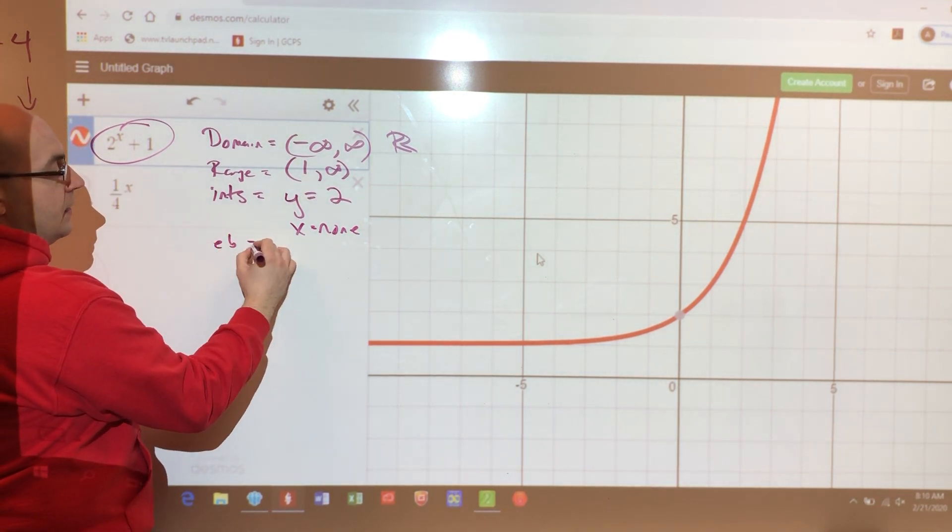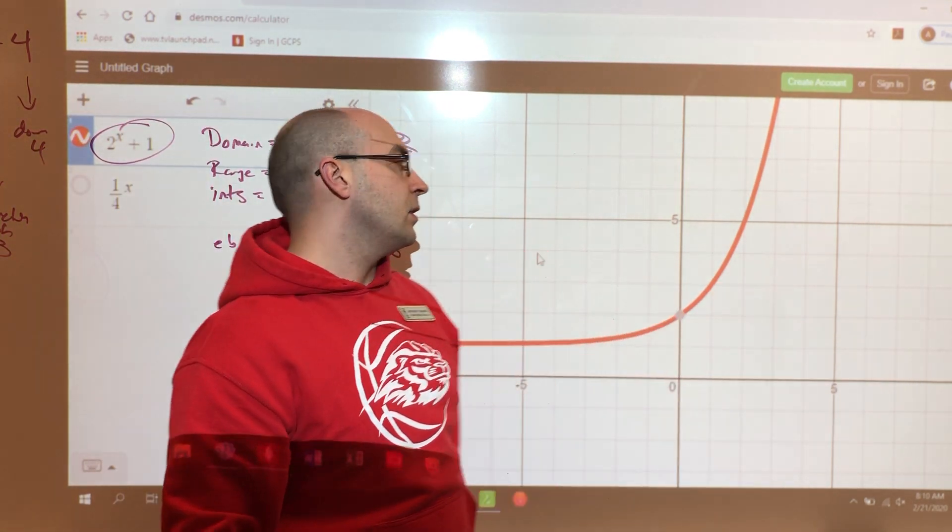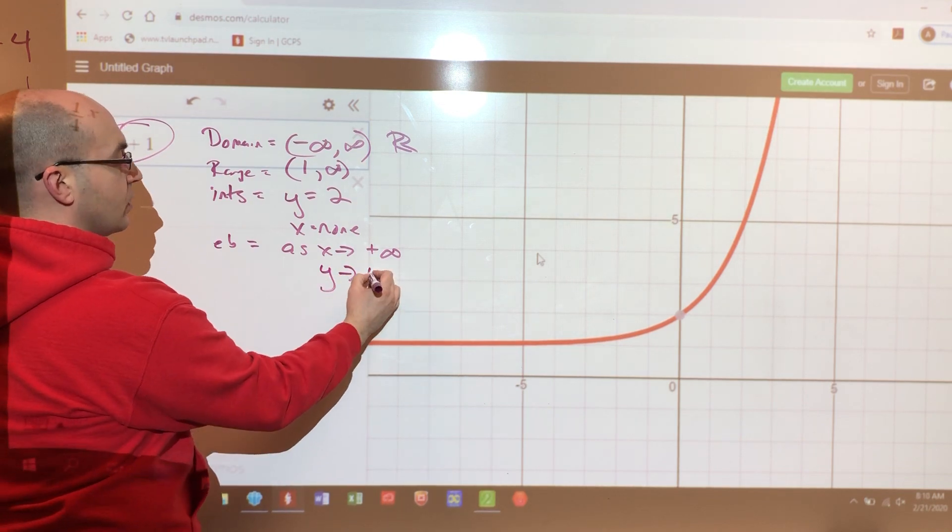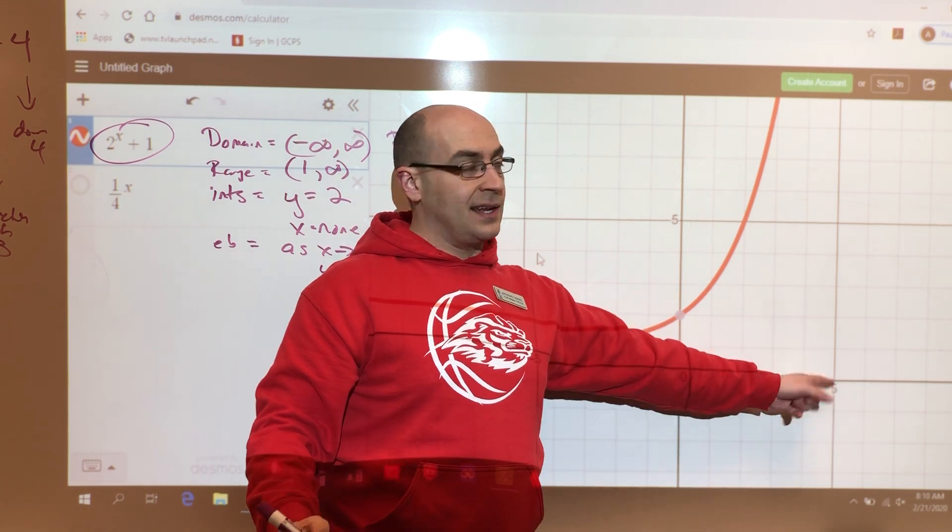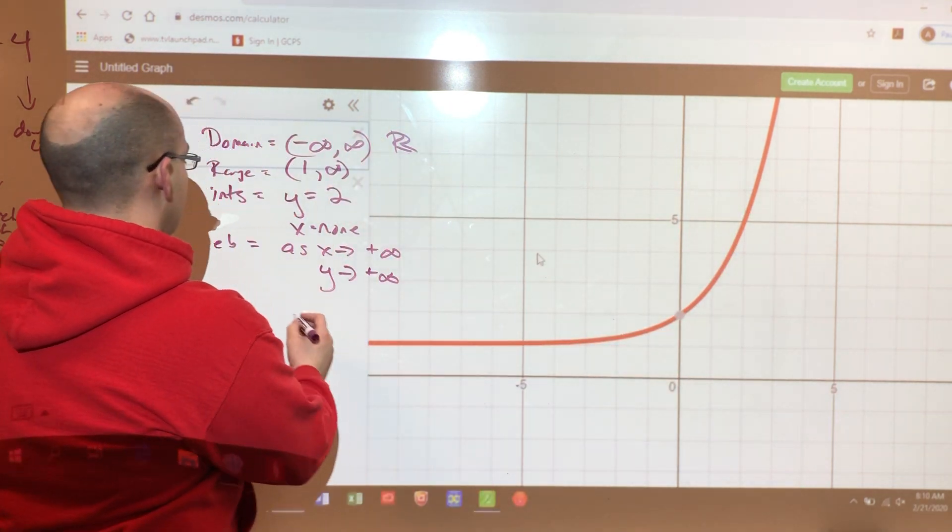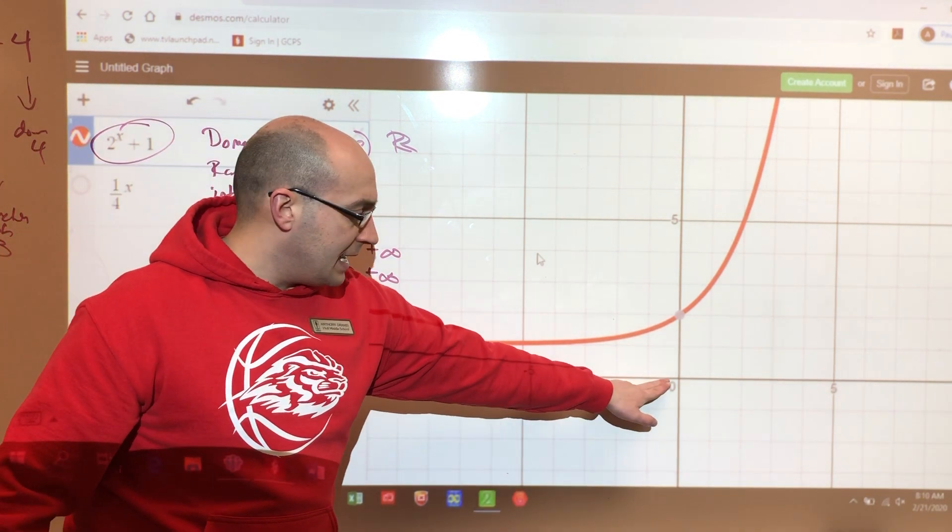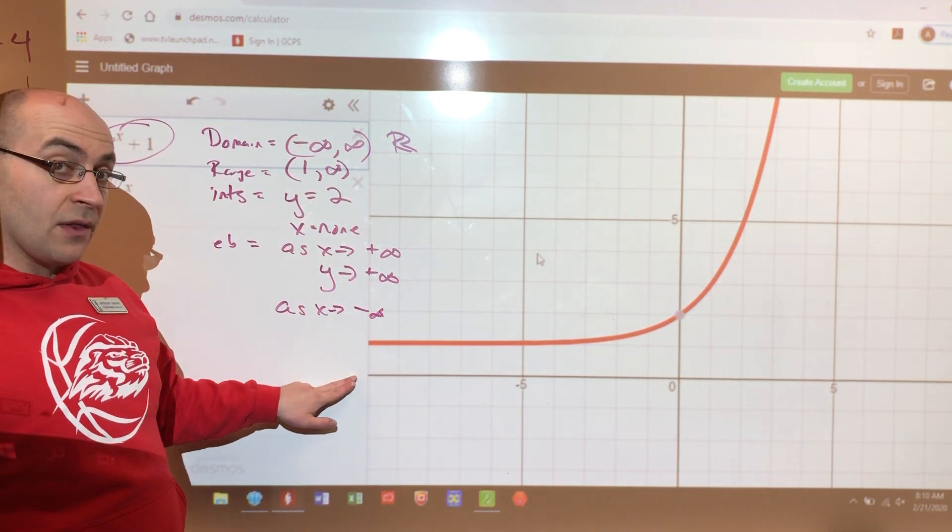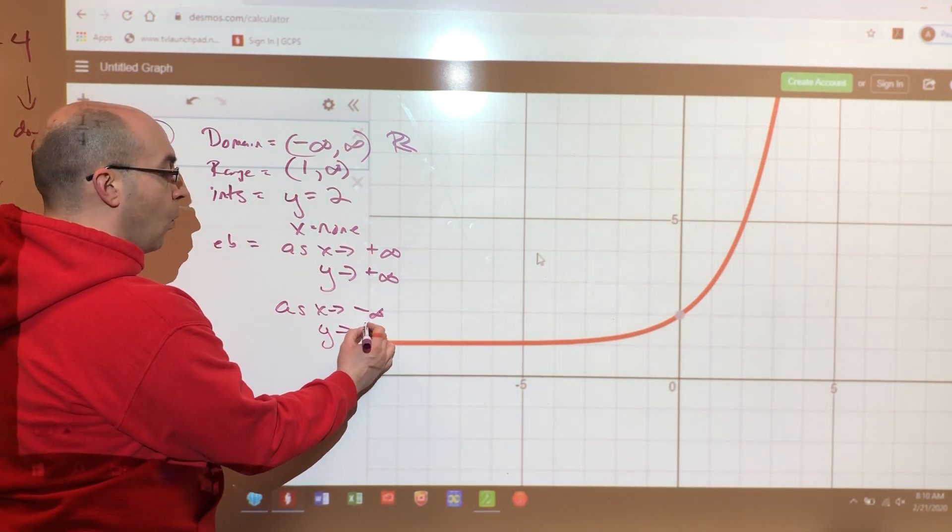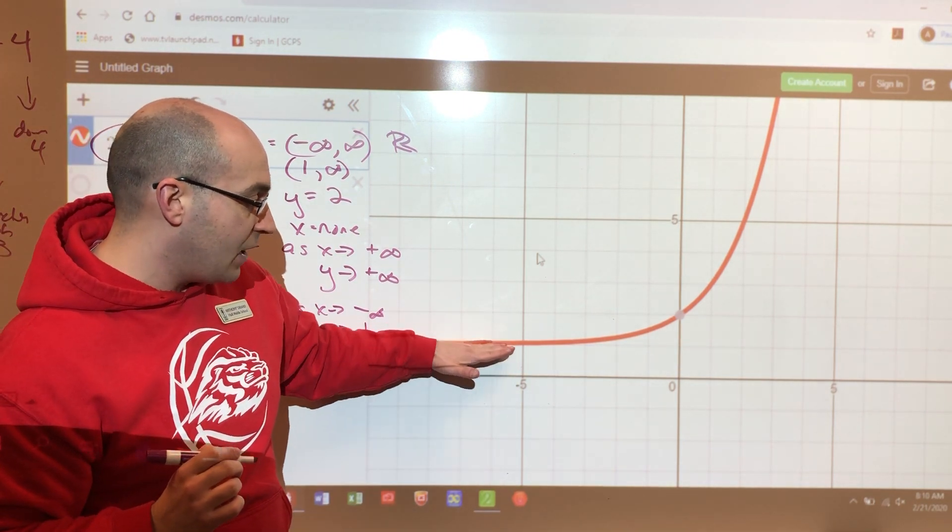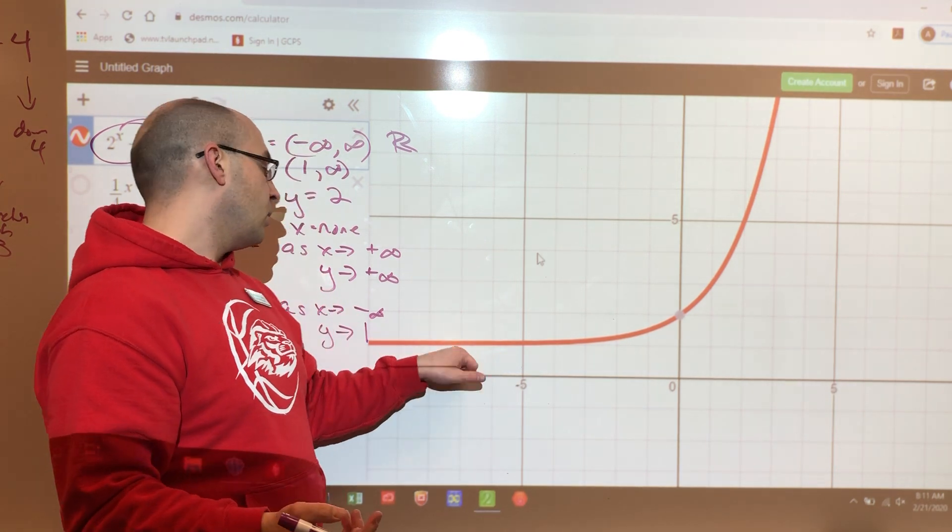End behavior, as x approaches positive infinity, meaning as x goes to the right forever, what is y doing? y approaches, or f of x approaches positive infinity because it's going up. So as x goes right, as increasing, y is increasing as well. The other side of it is as x approaches negative infinity. So this is the one that's weird. As the x values are decreasing, as in going on this way on the line, the y values are approaching one. They are approaching this value. They are not ever going to touch that value, nor are they going to go to the other side. They are going to approach that value.